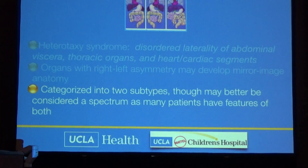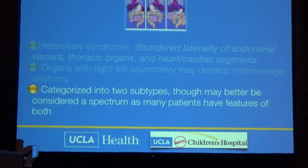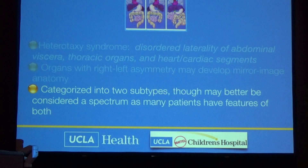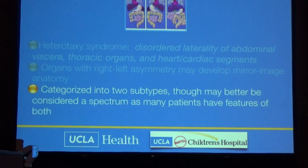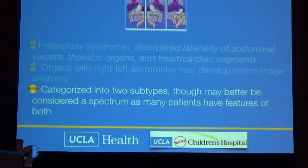When we talk in terms of subtypes of heterotaxy — like right isomerism or asplenia, or bilateral left-sidedness or polysplenia — we try to put patients into one of two different categories. But I honestly think that we should consider heterotaxy as a spectrum of disease, because many patients have features of one or the other. They're not completely asplenia or polysplenia; they're somewhere in the middle.